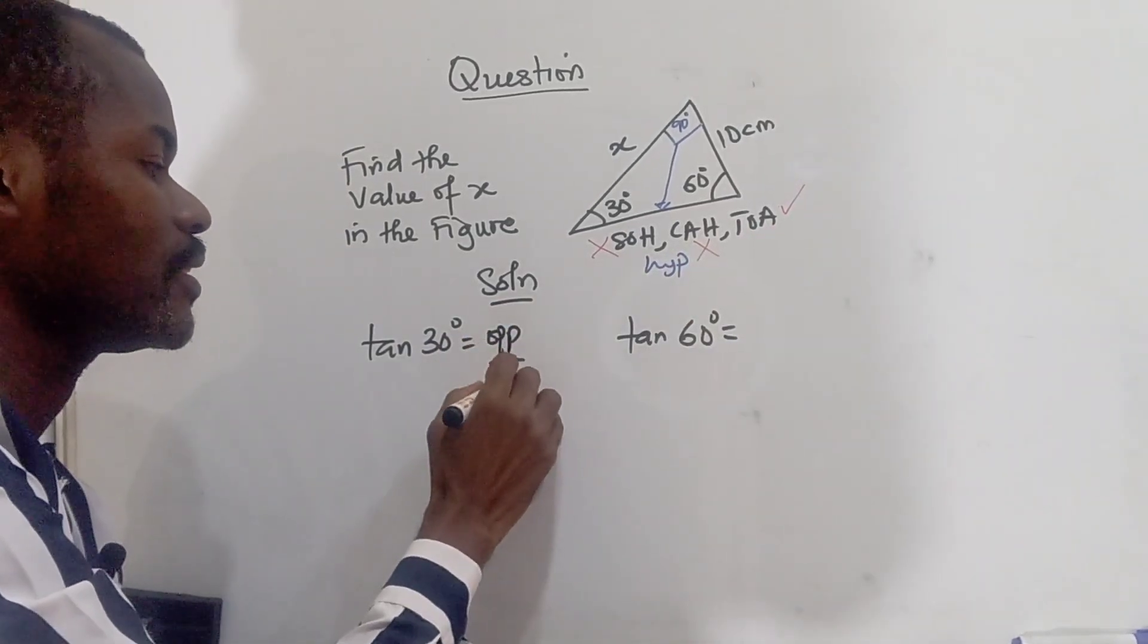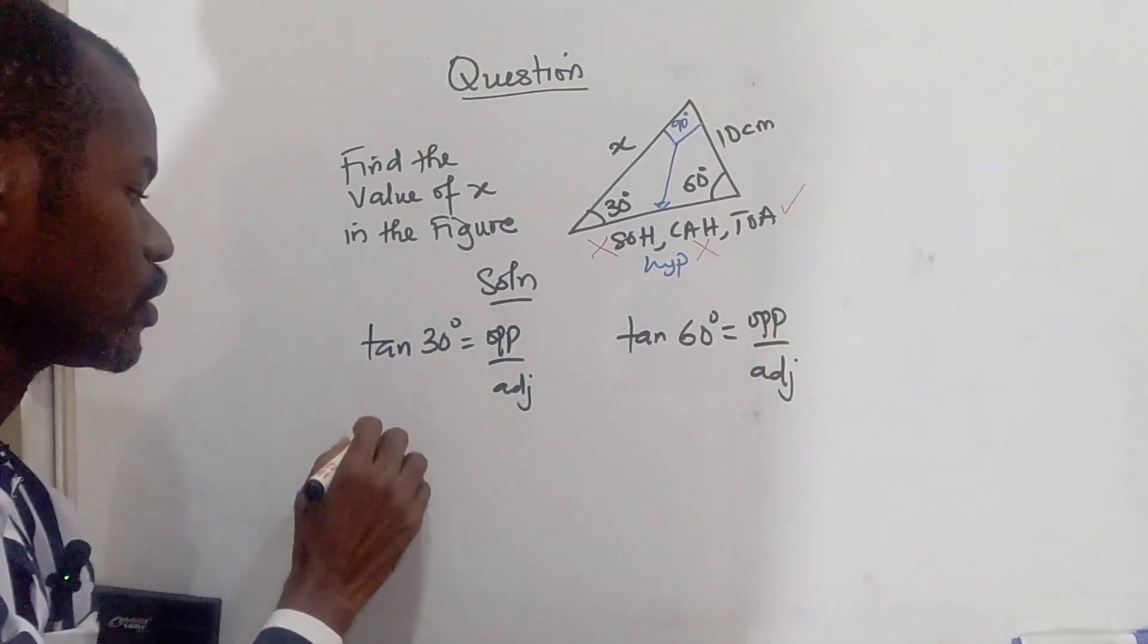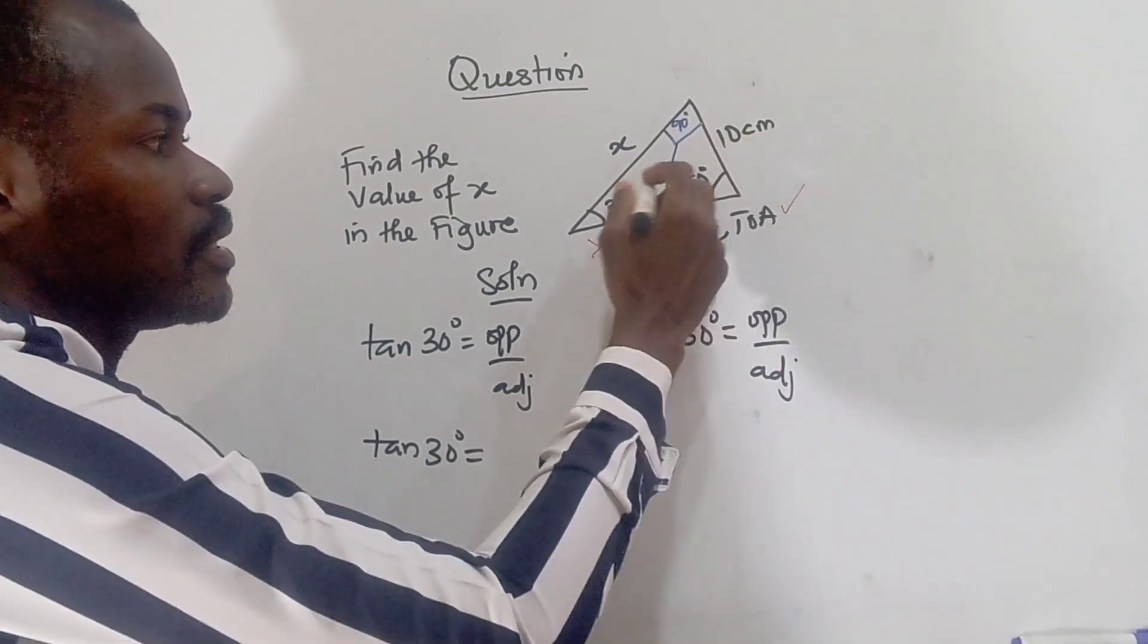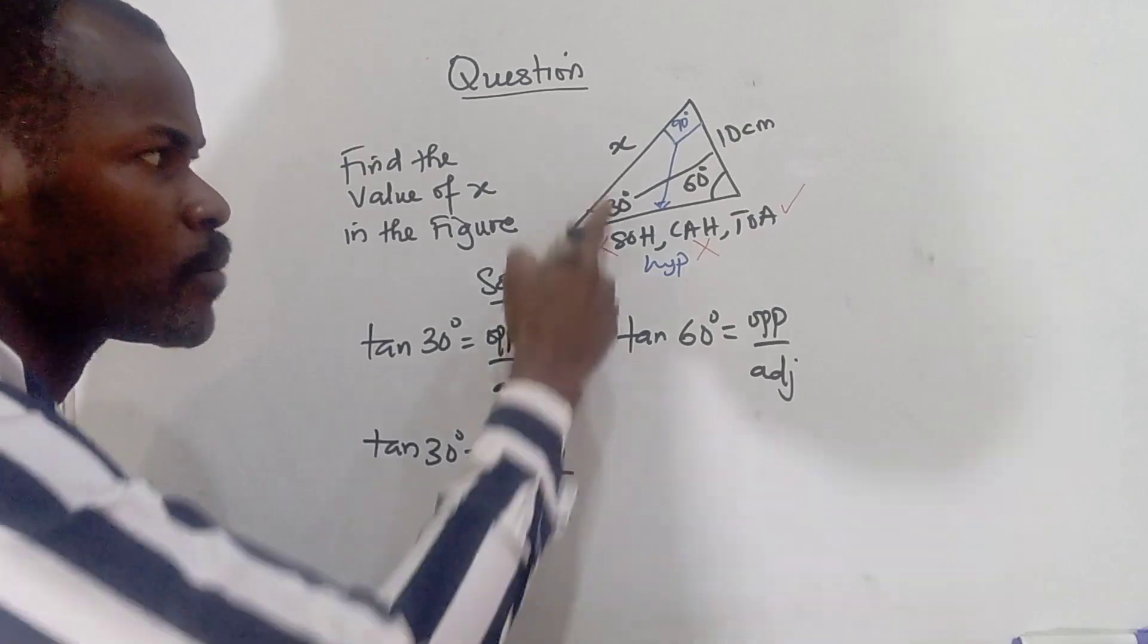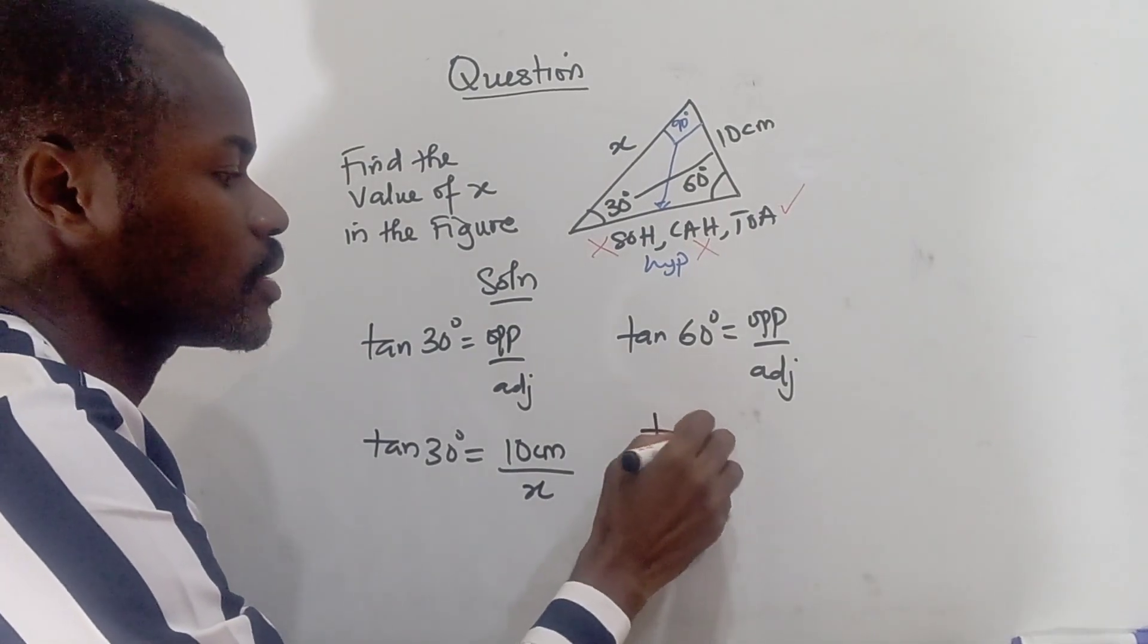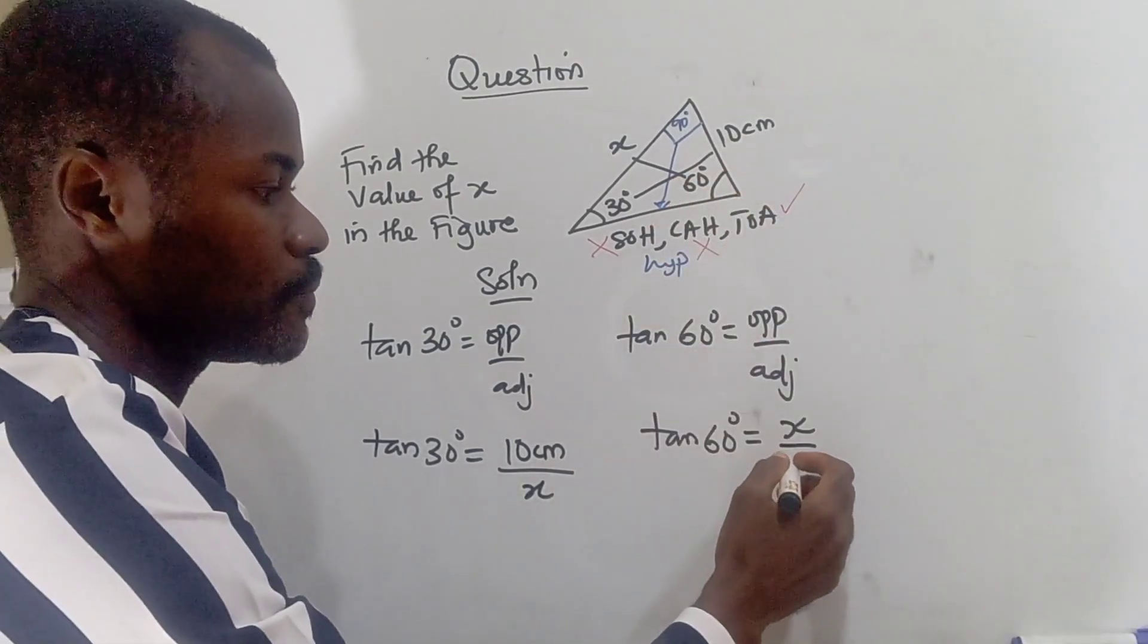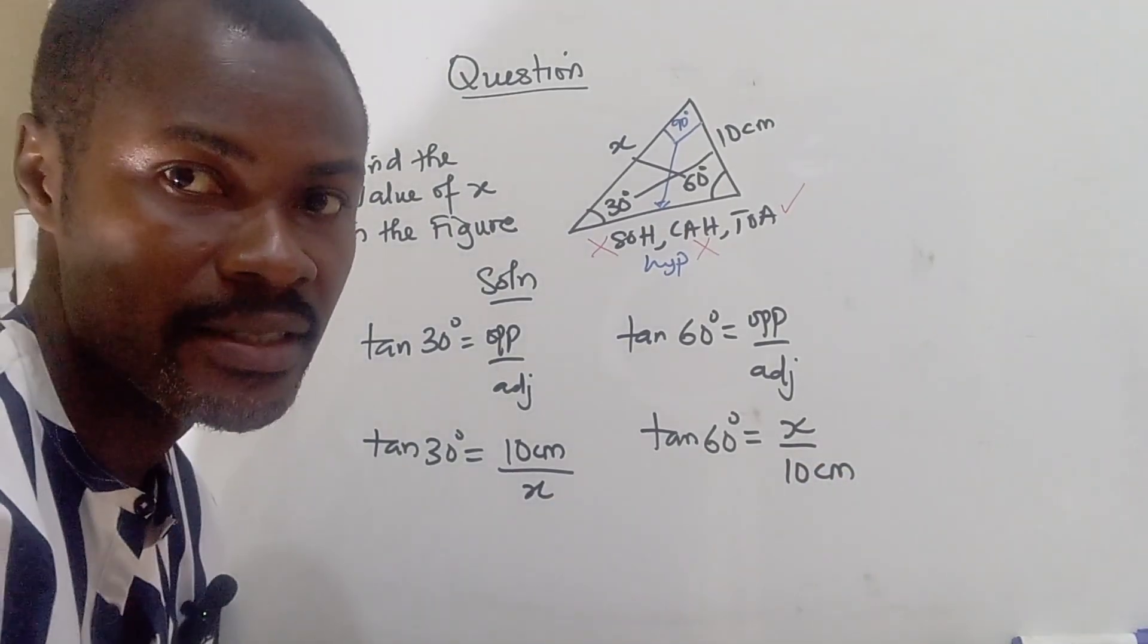Opposite divide adjacent. So tan 30 degree is going to give us, what is the opposite of 30? I have opposite that to this direction is 10 centimeter divide by our adjacent which becomes x. What about for this? So tan 60 degree is going to give us, our opposite to 60 is x divide, this becomes our adjacent. So either of these is going to give us the correct answer to this problem.